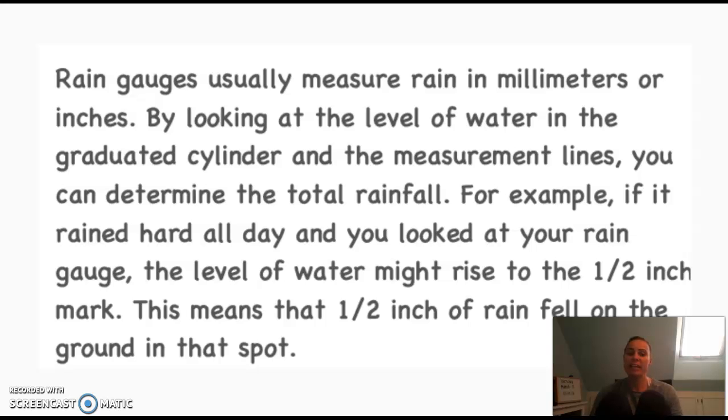For example, if it rained hard all day and you looked at your rain gauge, the level of water might rise to the half-inch mark. This means that a half inch of rain fell on the ground in that spot.